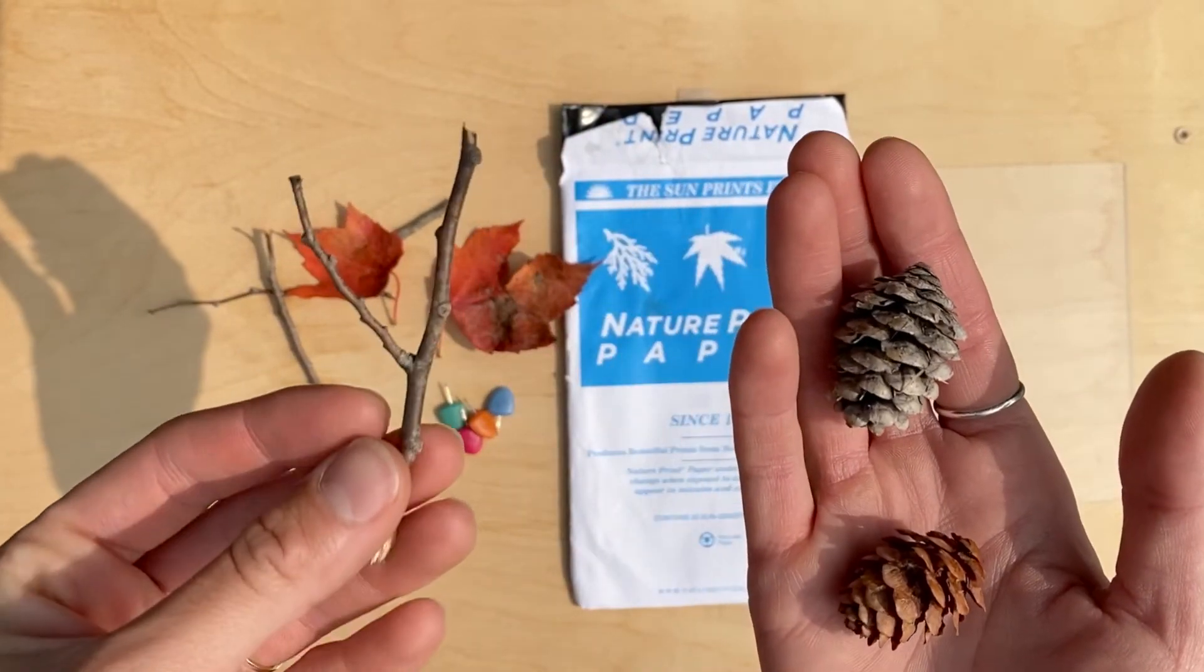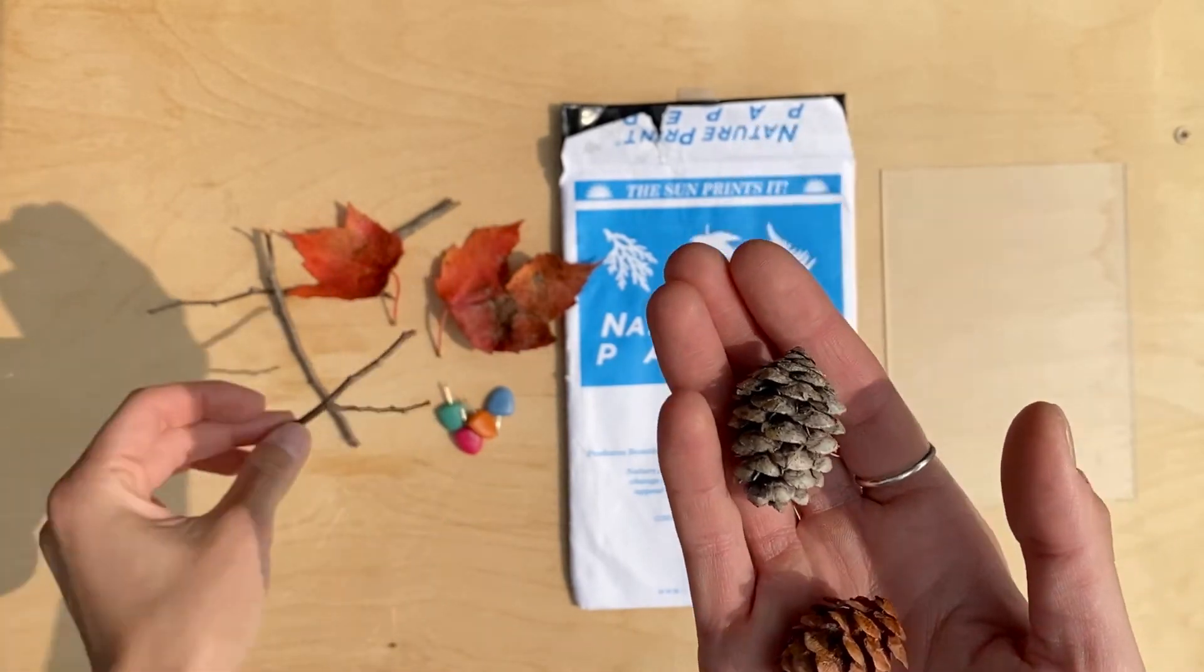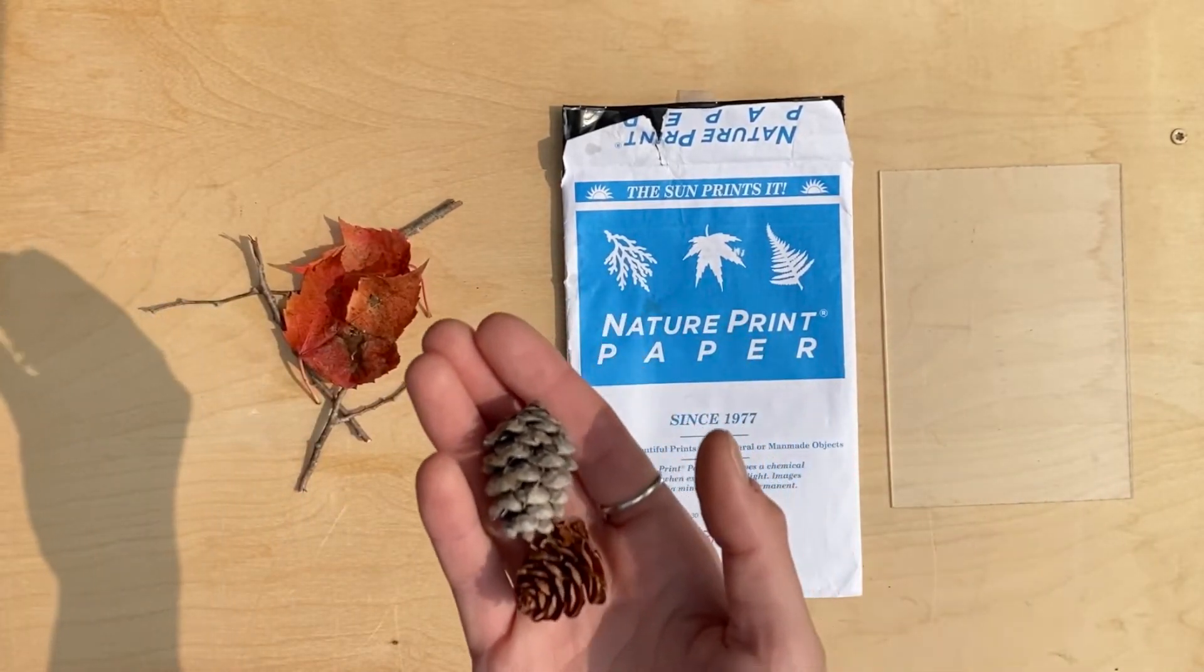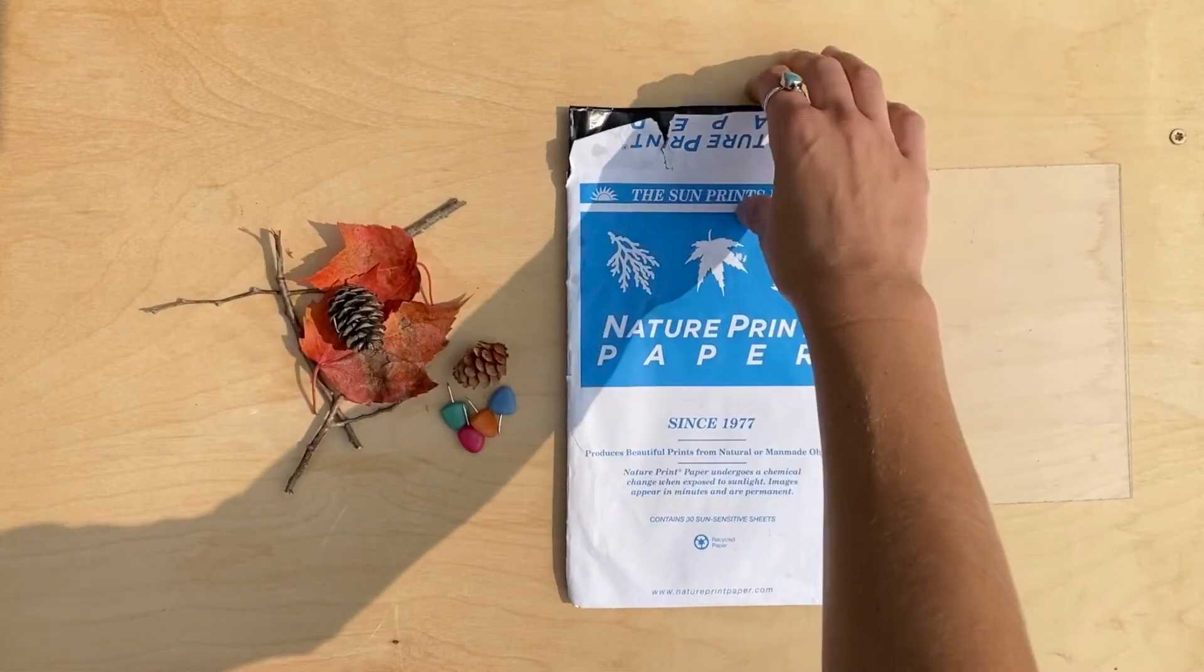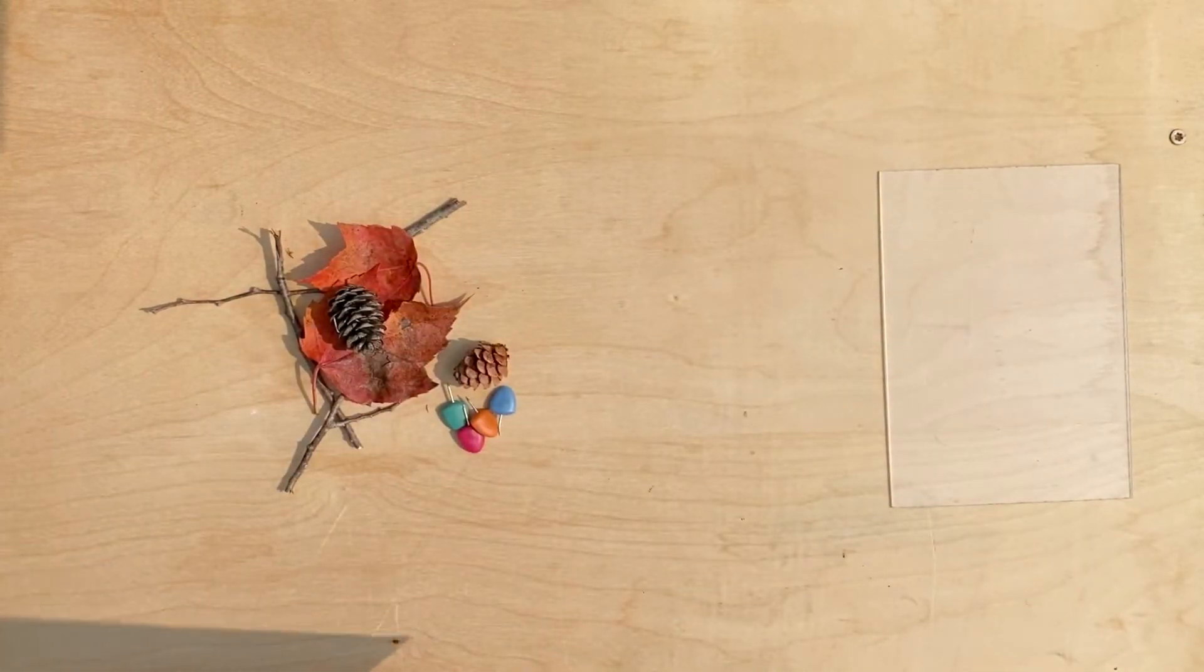I really liked this one because of its Y shape, and a couple of leaves. Once you have your items, you can go ahead and get your piece of paper out.